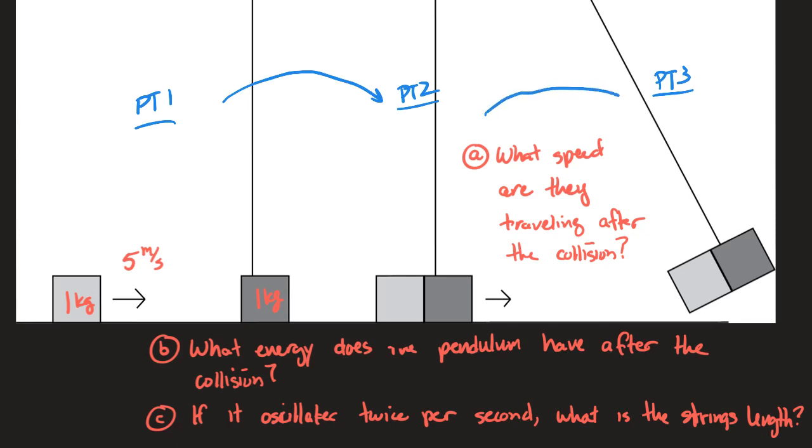However, momentum is not conserved when I look from part two to part three because once the cable begins applying a force to the system, that's an external force. But the fact that gravity is acting on the system suggests that mechanical energy will be conserved because that external force is a conservative force. So mechanical energy is conserved from part two to part three.